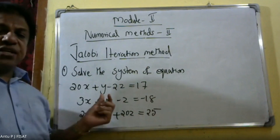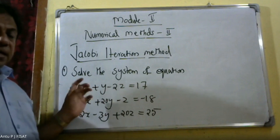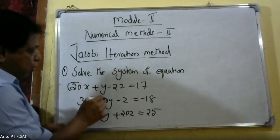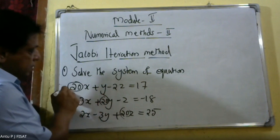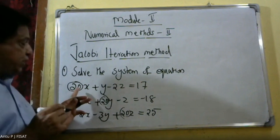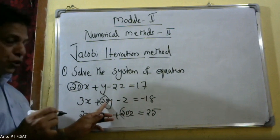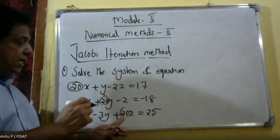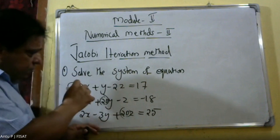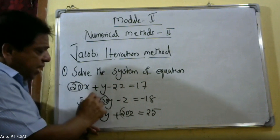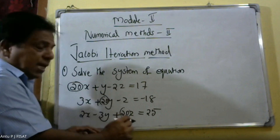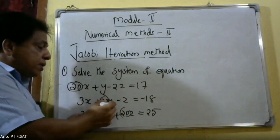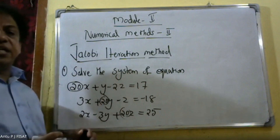First, we check that the equations are diagonally dominant. This system is diagonally dominant: in the first equation the coefficient of x is 20, in the second equation the coefficient of y is 20, and in the third equation the coefficient of z is 20.